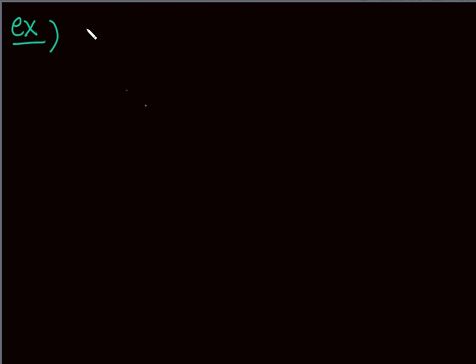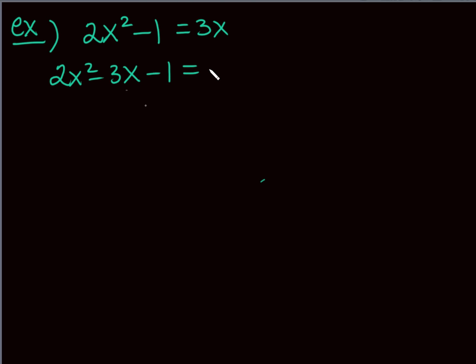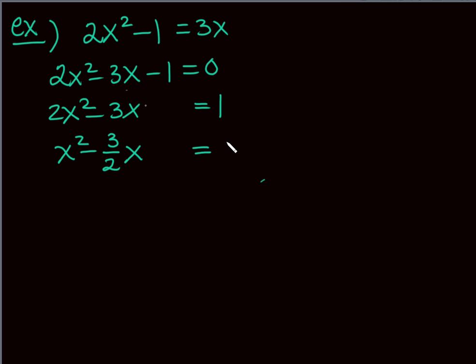Let's do another example: solve 2x² - 1 = 3x by completing the square. First bring 3x over: 2x² - 3x - 1 = 0. To complete the square I need a 1 in front of x², so divide everything by 2: x² - (3/2)x - 1/2 = 0. Move the constant: x² - (3/2)x = 1/2.